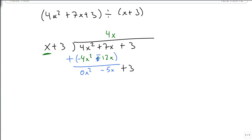And we just start our process over. So x goes into minus 5x minus 5 times. So that's going to give us minus 5x. Minus 5x minus 15, which we then subtract.